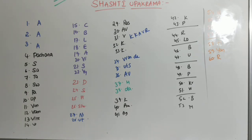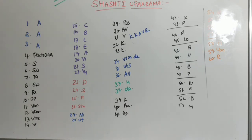Coming to the fifty-fourth one — it is Nasya. Fifty-fifth is Shirovirechana, fifty-sixth is Kavaladarana, and fifty-seventh is Dhuma. This completes fifty-seven. The fifty-eighth one is Ahara — a single set. The fifty-ninth one is Yantra, and the sixtieth one is Rakshavidana. This completes our total sixty names of this Shashti Upakrama.